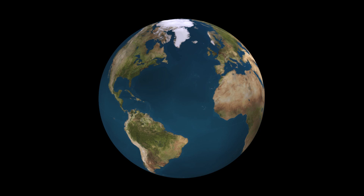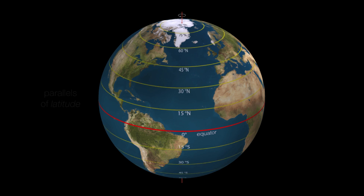To help us learn about the celestial sphere, let's talk about how we define locations on Earth. Knowing that the Earth is in fact rotating, we can define the rotation axis as piercing through the Earth's north and south poles. We can divide the Earth into northern and southern hemispheres from the equator, and draw parallels to the equator. We define the equator as zero degrees of latitude, going up to 90 degrees north at the North Pole, and down to 90 degrees south at the South Pole.